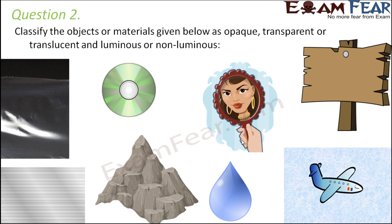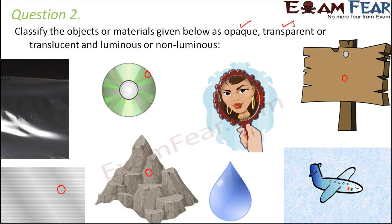Question number two: classify the objects or materials given below as opaque, transparent or translucent, and luminous or non-luminous. Opaque means that object which doesn't allow light to pass through it. Looking at the picture, the rock pieces are opaque, the wooden block is opaque, a mirror is also opaque — that is why all the light gets reflected and image formation happens. A CD and an aluminum sheet are also opaque.